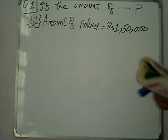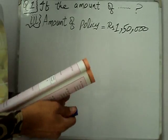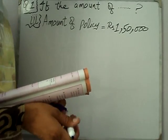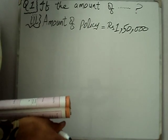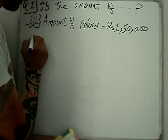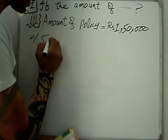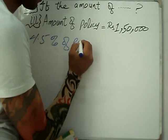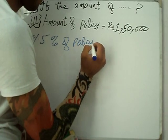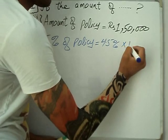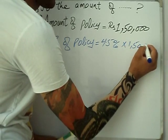Question number one, part three: policy amount is ₹1,50,000. We need to find the yearly premium. For that, we will find 4.5% of the policy amount. So 4.5% of ₹1,50,000.